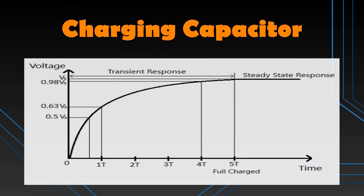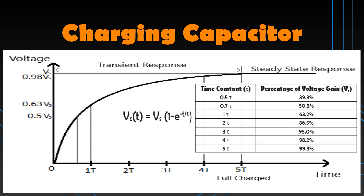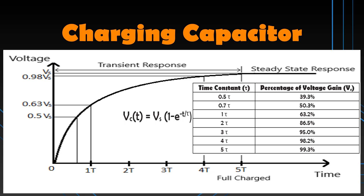Here is the voltage-time graph of capacitor charging. Time is on the horizontal axis and voltage is on the vertical axis. The graph curve shows two types of responses: the transient response in which the voltage is continuously changing, and the steady-state response in which the values are steady. We compute the charging curve using this formula. The capacitor gets 50% charged at just 0.7 tau, approximately 63% charged at 1 tau, and so on. Note that the capacitor will never become 100% charged in reality, so 5 time constants are used to consider a capacitor fully charged.